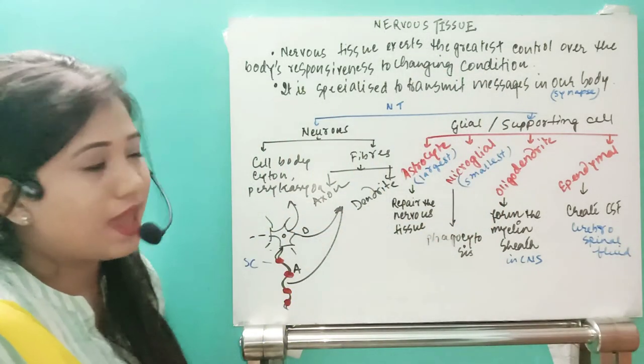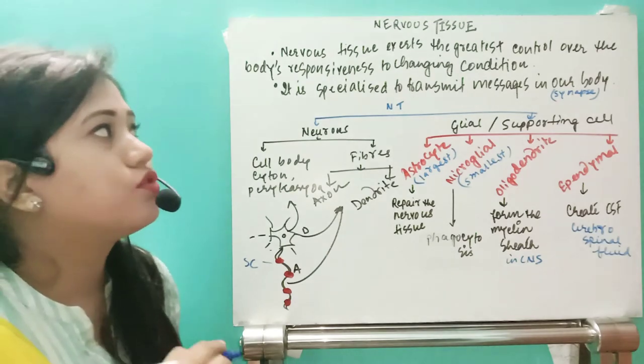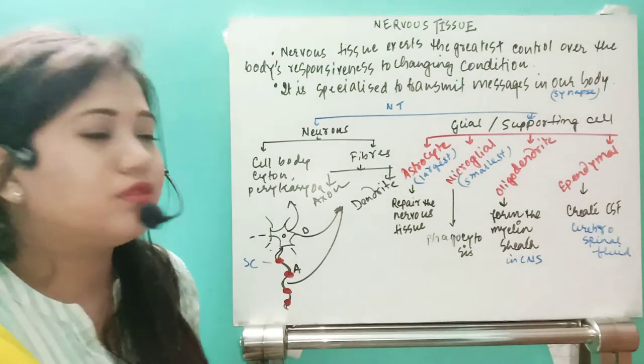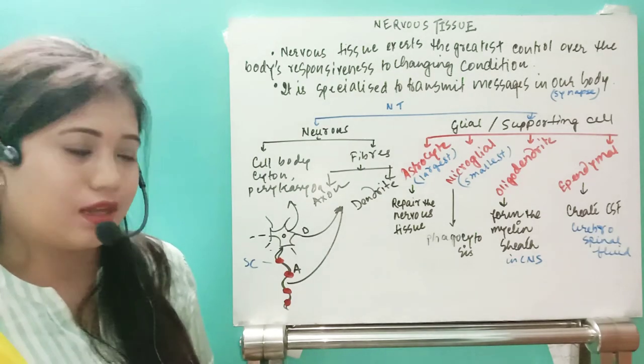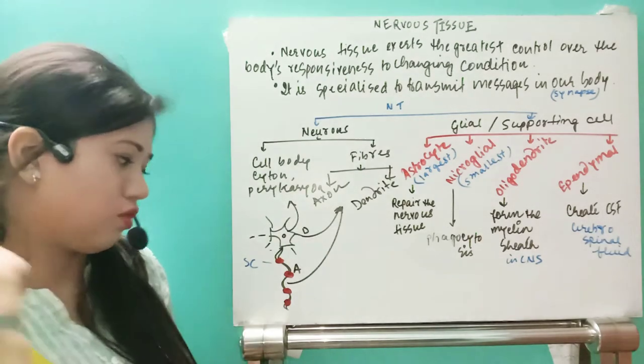The ependymal cell is very important — it creates the CSF, which stands for cerebrospinal fluid. So cerebrospinal fluid is formed from the ependymal cell.